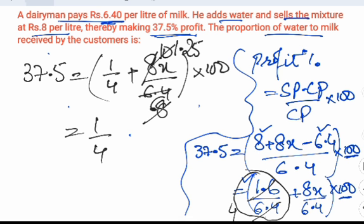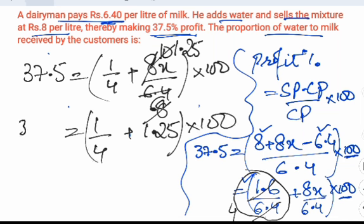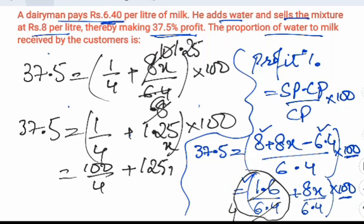This comes out to be 1 by 4 plus 1.25 into 100 equal to 37.5. This is 1.25x. So this 100 by 4 plus 1.25x. So this will get cancelled, 25.